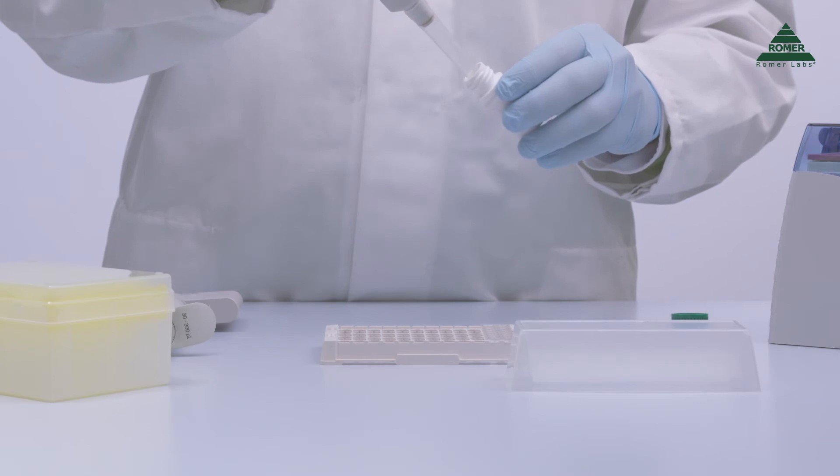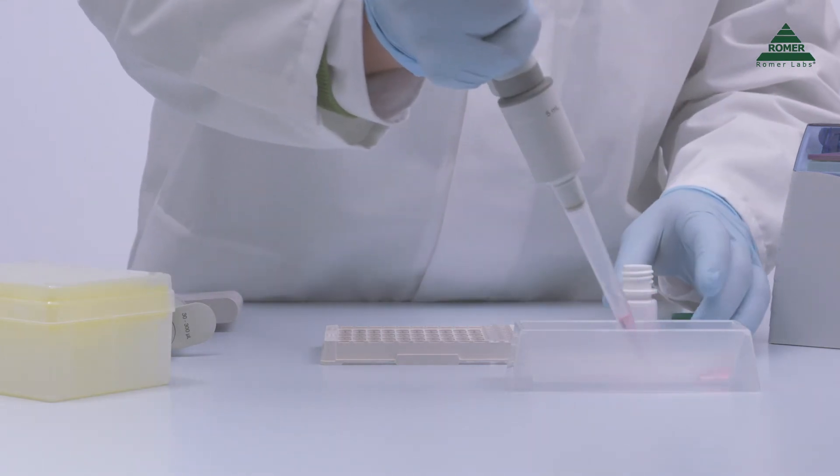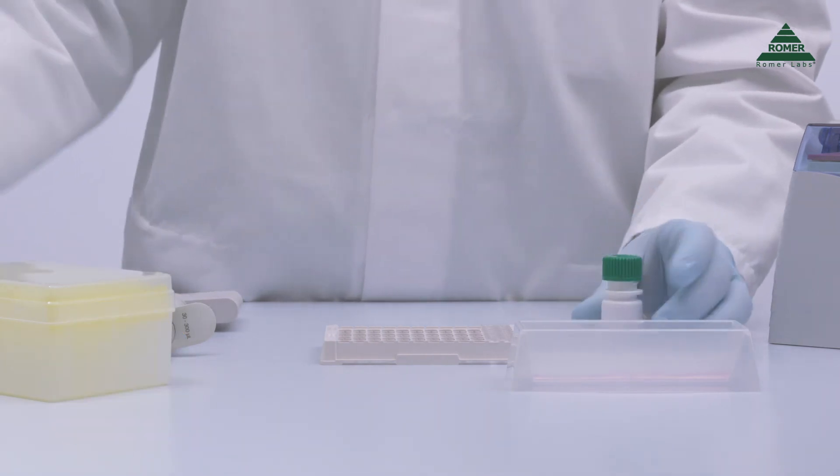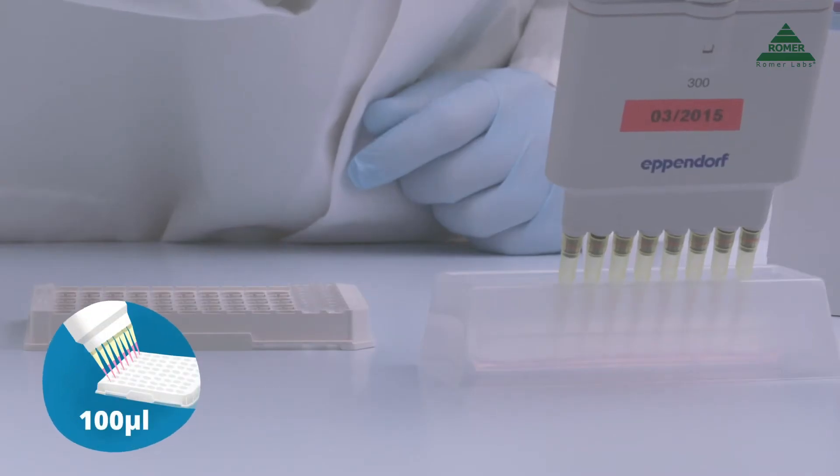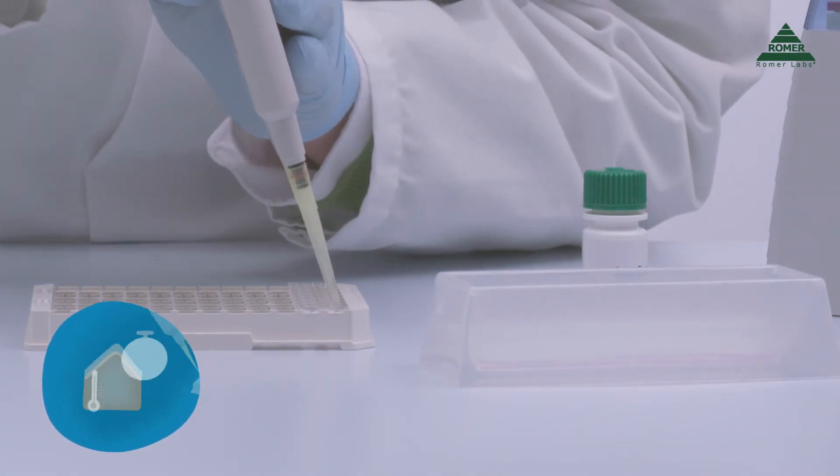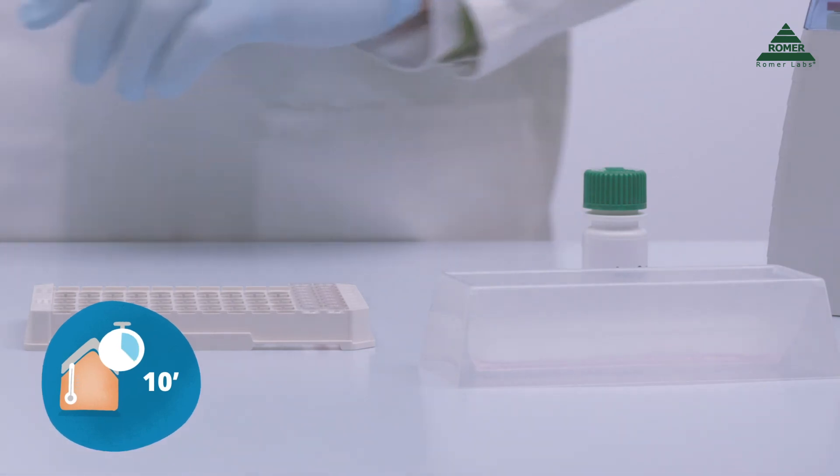Pipette the required amount of enzyme-conjugate solution into a reagent reservoir. You need approximately 120 microliters per well. Pipette 100 microliters of enzyme-conjugate solution into each microwell with an 8-channel pipette and incubate at room temperature for 10 minutes.